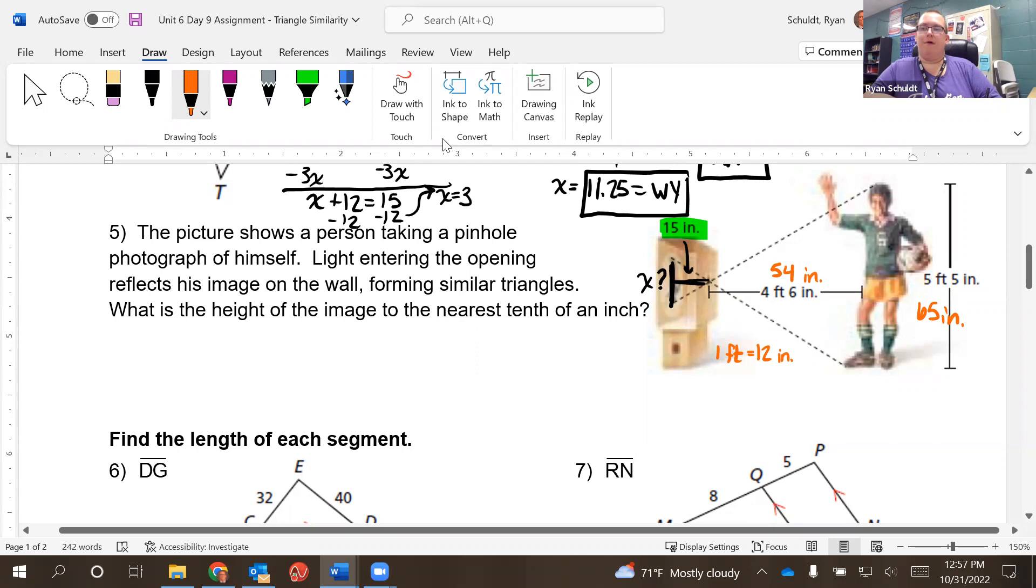Okay. So now let's set up our proportions. 54 over 65 equals. So at 54, I did the height, if you will, of the triangle. Or I guess the depth, I should say. The depth of the triangle over the person's height. So now I need to do the depth of the box, which is 15, over the picture height. We're going to call it X.